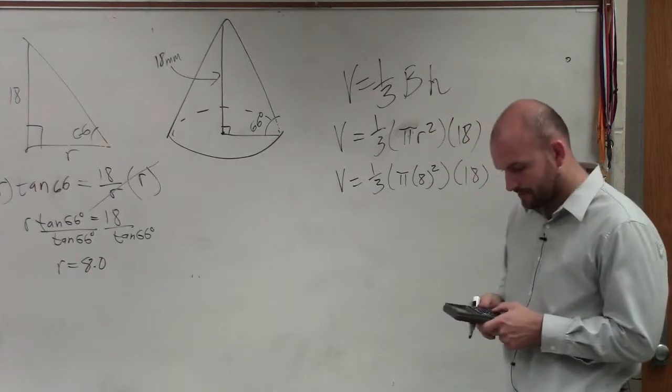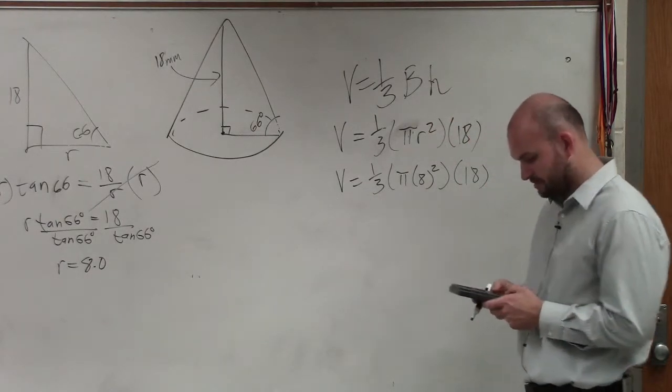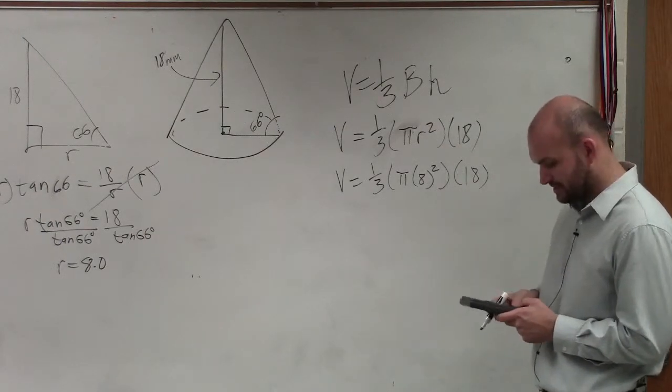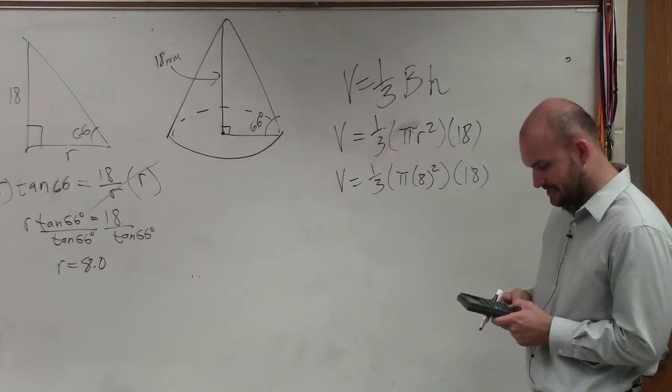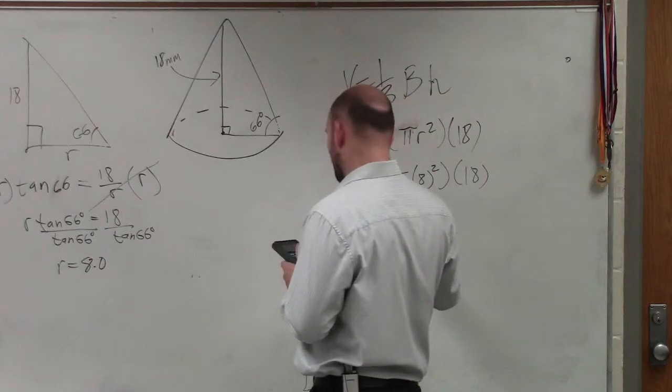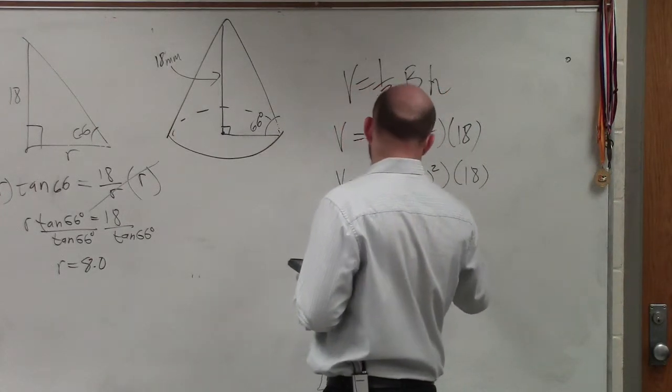So therefore, I just take 1 divided by 3 times pi times 8 squared is 64 times 18. And the volume of this is going to be 1,206.4.